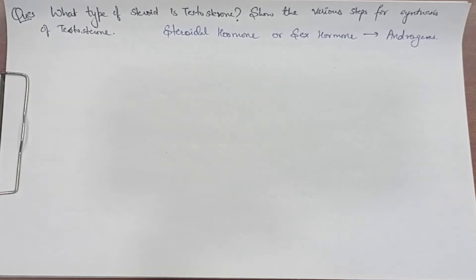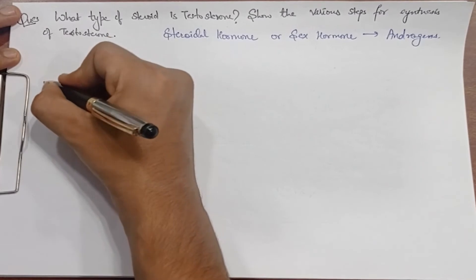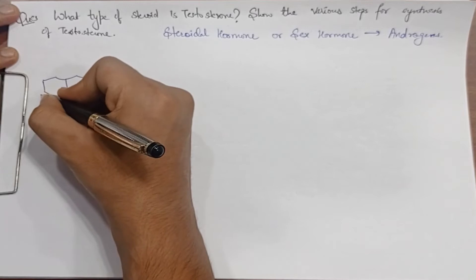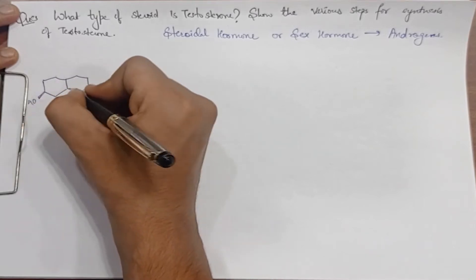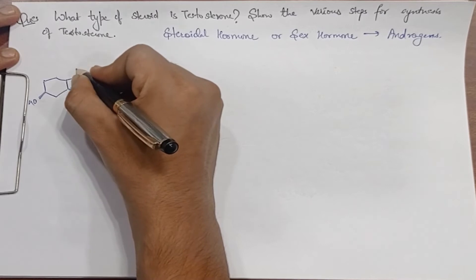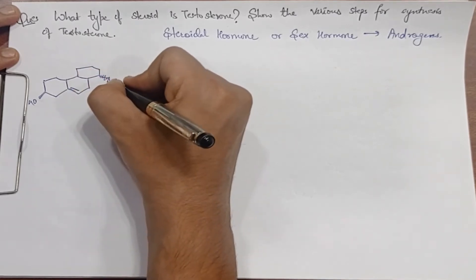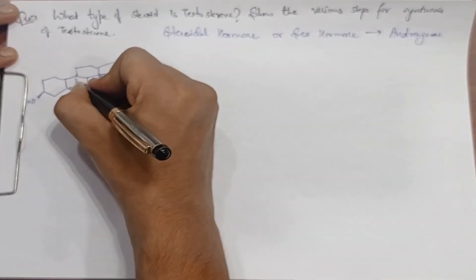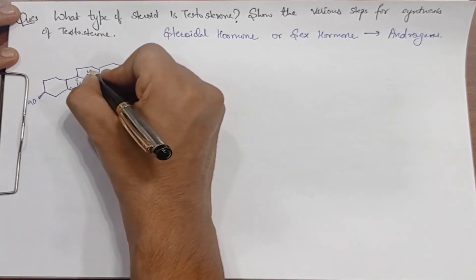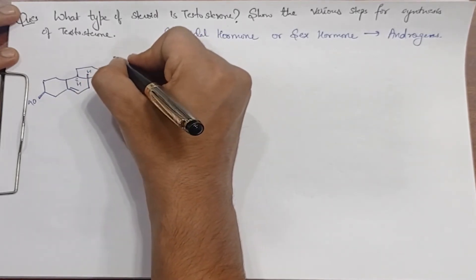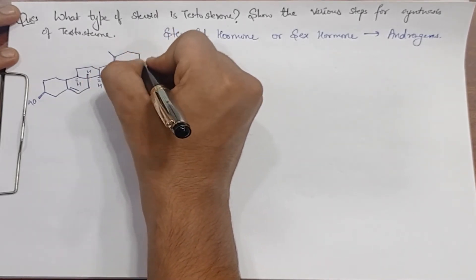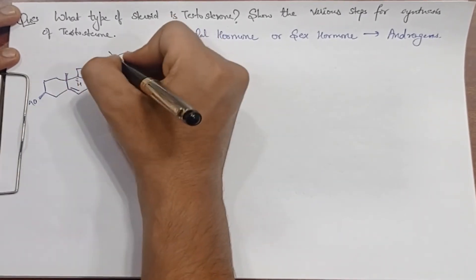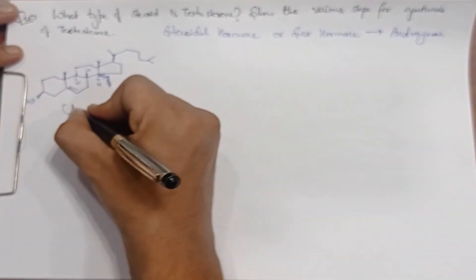This is the chapter. First we will see our cholesterol. We will draw it here. Hydrogen, hydrogen, hydrogen wedge. And we will have a side chain. One methyl group here and here. This is our cholesterol.